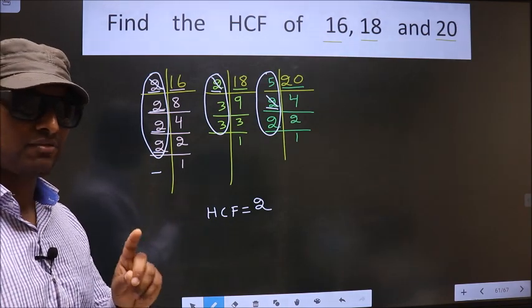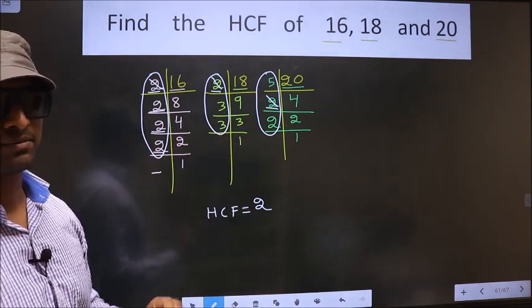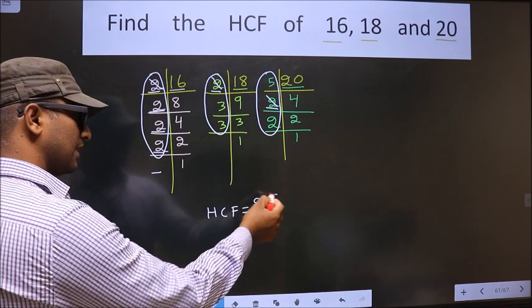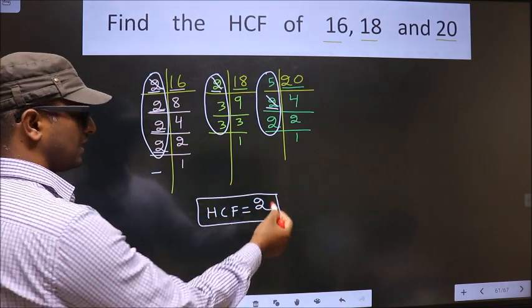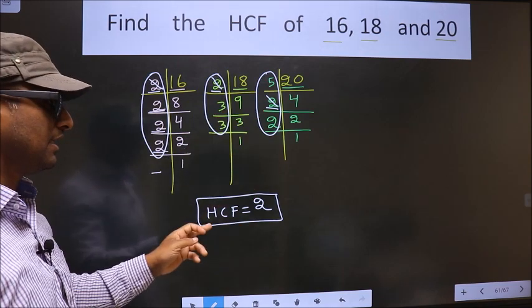Therefore, we have only one number 2 present in all the 3 places. Therefore, this itself is our HCF. Am I clear?